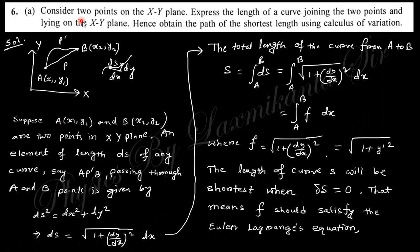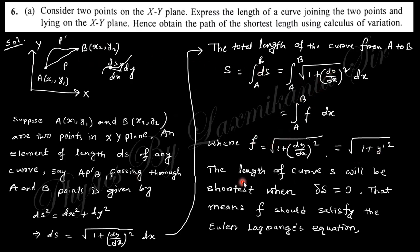The first question says: consider 2 points on the xy plane. Here x is the length of the curve joining those 2 points and lying in the xy plane. Hence obtain the path of the shortest length using calculus of variation. This question was also asked in 2022. If you consider these 2 points with coordinates (x1, y1) and (x2, y2), the length element ds equals the square root of dx squared plus dy squared. Integrating gives the total path length, and the length of the curve will be shortest when this variation is zero.